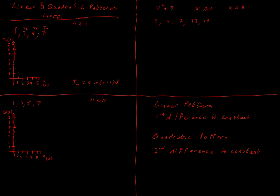What's the relationship? We start at 1, we add 2 to get to 3, add 2 to get to 5, add 2 to get to 7. The difference between each one of our numbers is the same. So for a linear pattern, the first difference is constant — the difference between each term is always the same number. It's always plus 2 in this case.